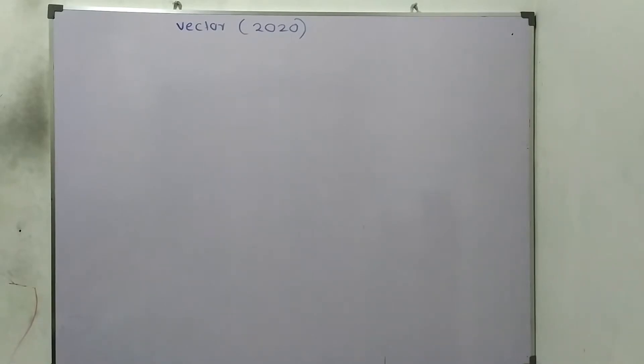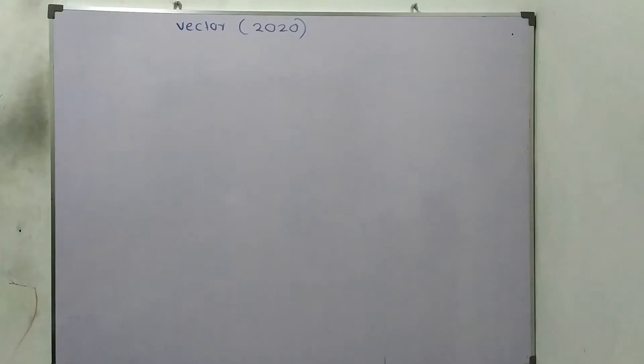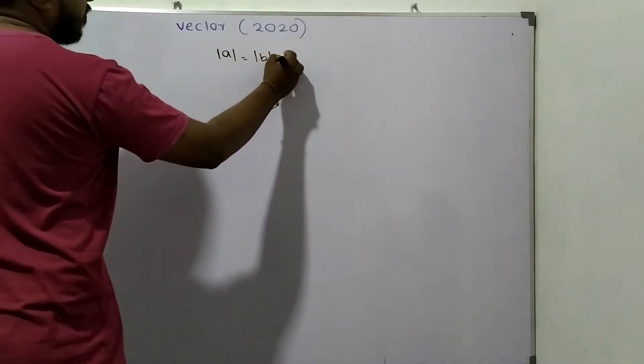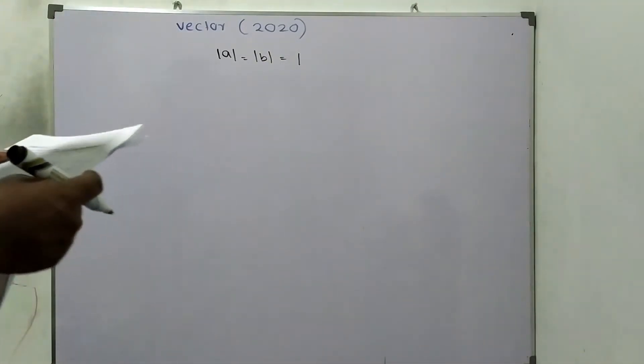Welcome back to the online tutor everyone. Today I am going to discuss the 2020 JEE Advanced paper vector question. According to this, let A and B be two unit vectors. A and B are unit vectors, that means modulus A and modulus B equal one. The position vectors of the three points A, B, C are given.